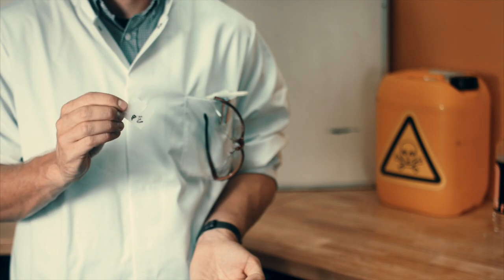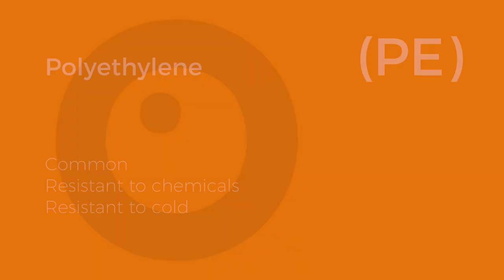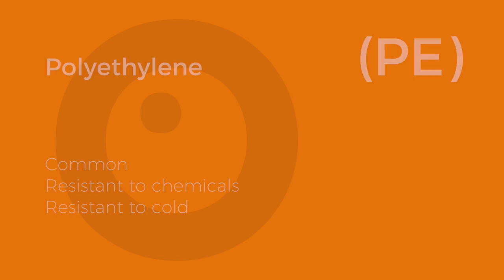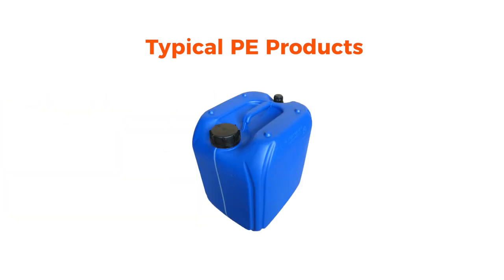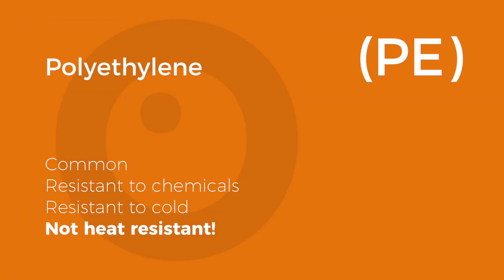Polyethylene, PE. This is the most common type of plastic. It's resistant to chemicals as well as cold materials. Typical PE products include industrial jerry cans, but also the ice cube tray you find in your fridge. One downside: PE is not heat resistant.